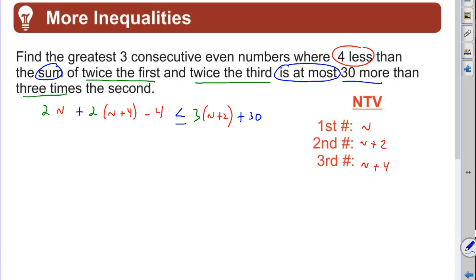Now we've got to solve it. All right, we're going to have some distributing. Two N plus two times N is another two N plus eight minus four less than or equal to three N plus six plus 30.